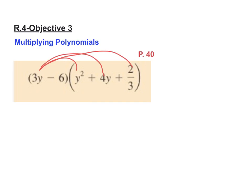So 3y times y squared is 3y to the third. 3y times 4y is 12y squared and 3y times two thirds is 2y. So there's the first part of it.